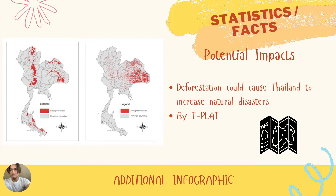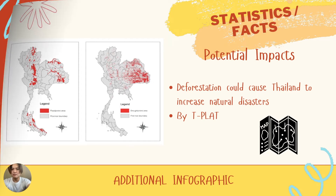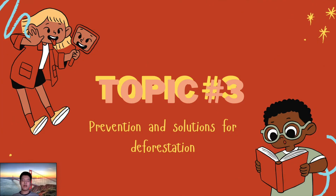This is the potential impact. Deforestation could cause Thailand to experience increased natural disasters. Next, I will present topic 3: prevention and solutions for deforestation.